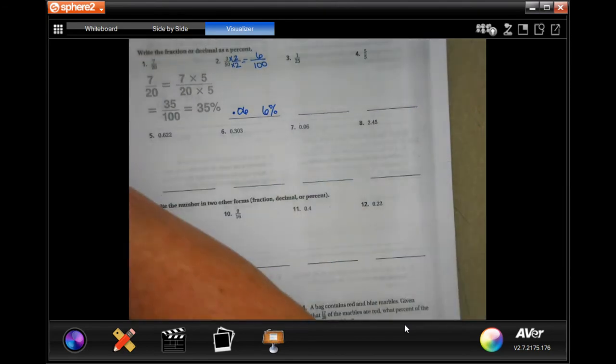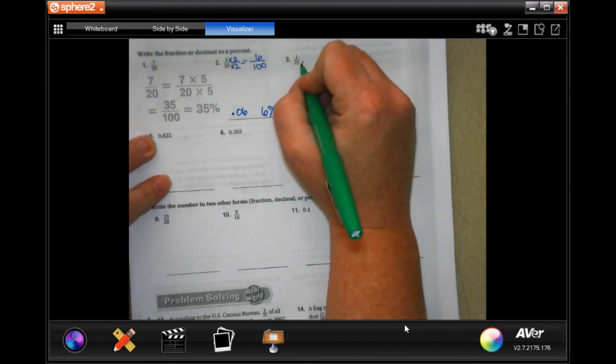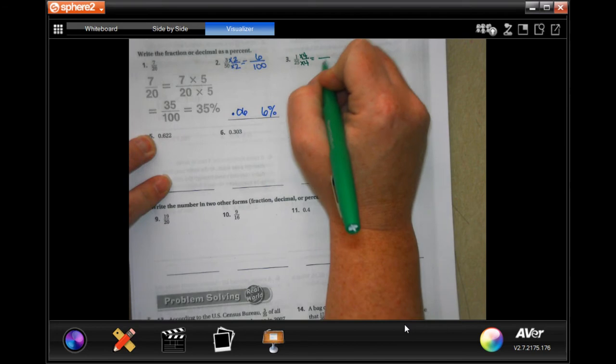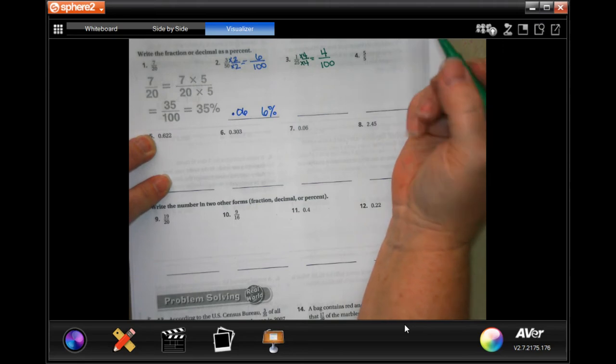Now, let's do number 3. Number 3 is 25. We have to multiply that by 4, 4 on top and on bottom to get to 100. And if we multiply the top, we get 4.